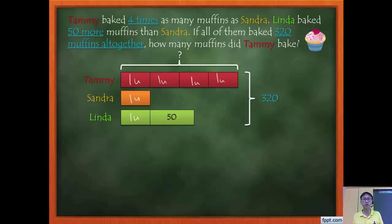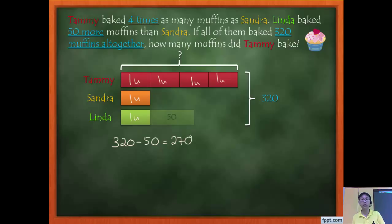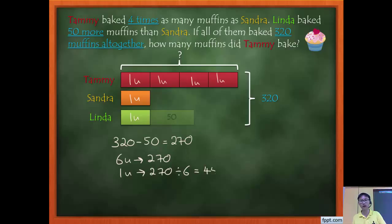I need to get rid of the extra 50 by taking 320 minus 50, which gives me 270. That 270 corresponds to 6 units total. So 6 units equals 270, meaning 1 unit equals 270 divided by 6, which is 45. Since Tammy has 4 units, I multiply 45 times 4, and that gives me 180.